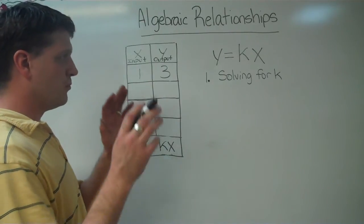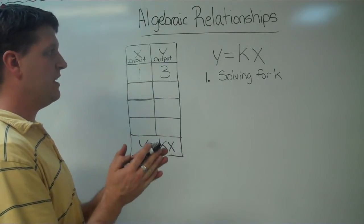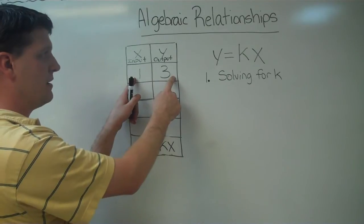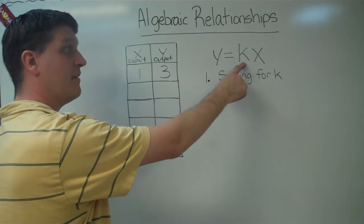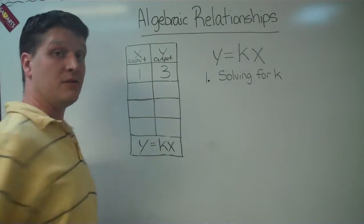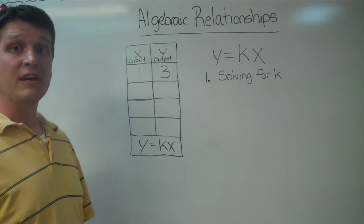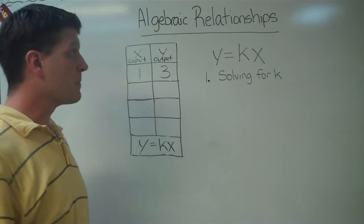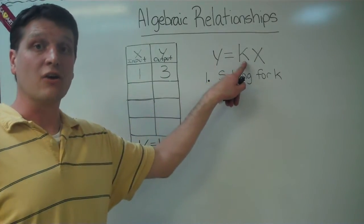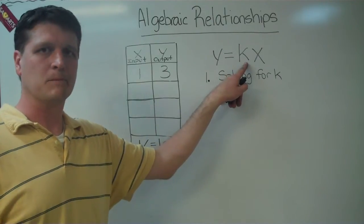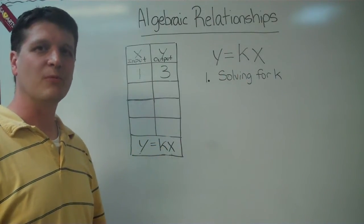What we're going to do is we have our given numbers, one and three. What we have is our one and our three, but what we don't have is our value of k, our constant. We need to find that. So let's go ahead and get started, and we're going to find it.